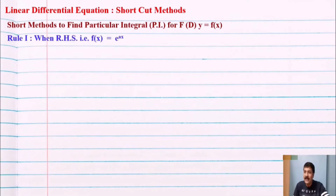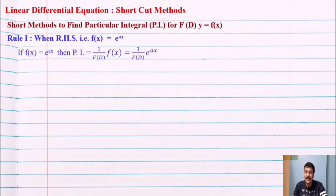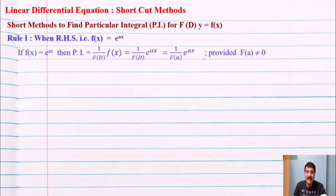Rule number one: when the right-hand side f(x) equals e^(ax). If f(x) = e^(ax), then the particular integral PI = 1/f(D) operating on e^(ax), which equals 1/f(a) · e^(ax), provided f(a) is not equal to zero. Every D in the denominator is replaced by a, provided the denominator is not equal to zero.